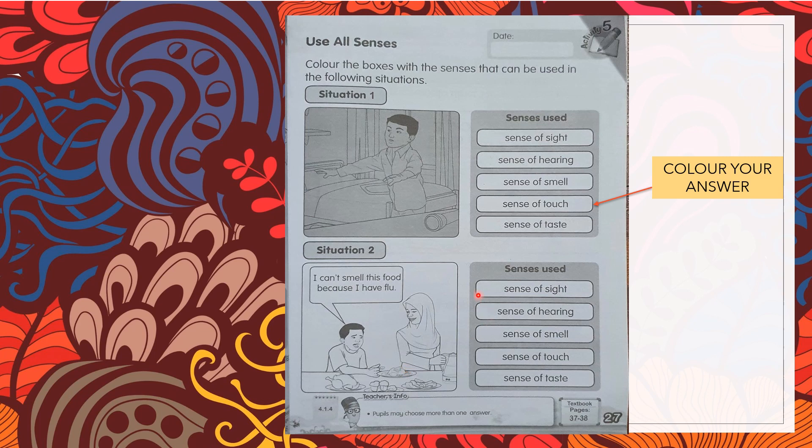Sense of sight, deria penglihatan. Sense of hearing, deria pendengaran. Sense of smell, deria menghidu. Sense of touch, deria menyentuh. Dan sense of taste, deria merasa. Dia tidak dapat menggunakan deria menghidu, jadi kita tidak boleh mewarna ini ya. Jangan warnakan sense of smell.